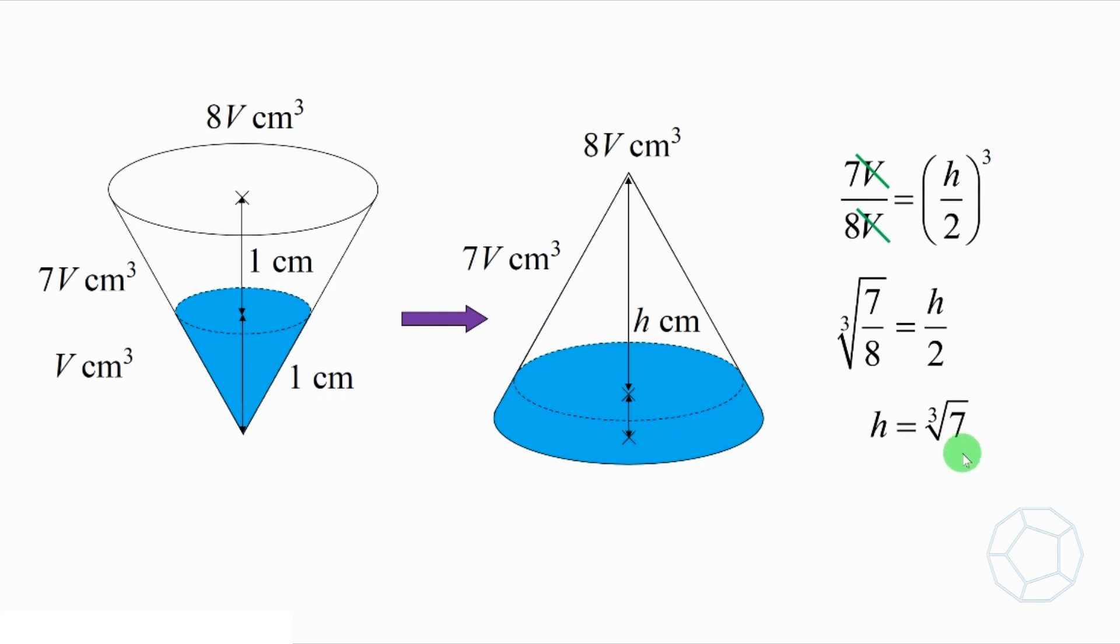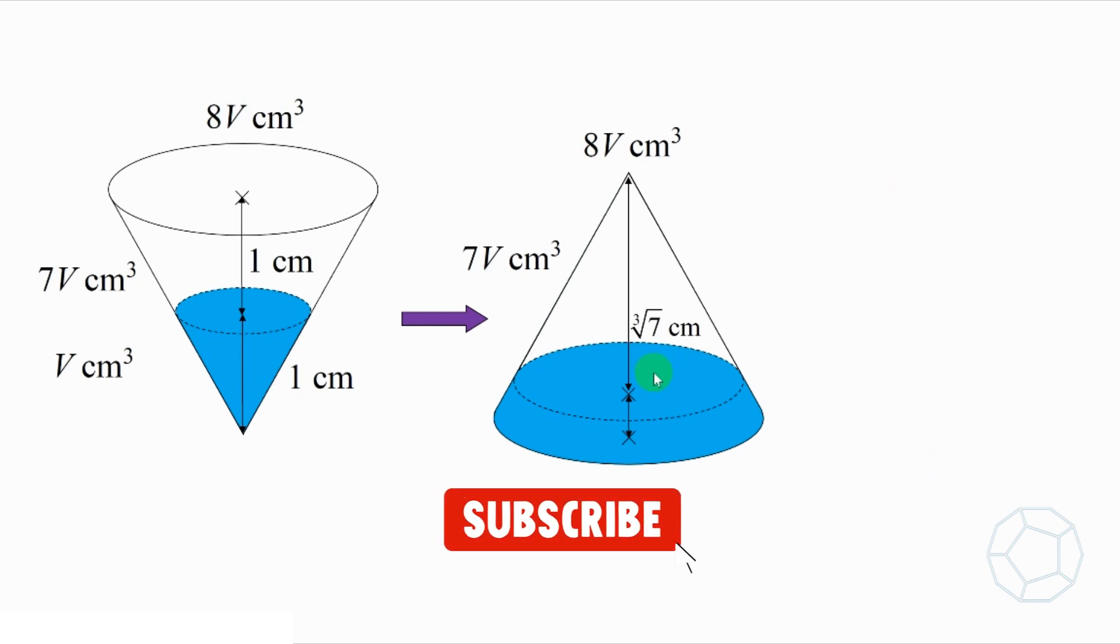So, we get it. The new water level is equal to 2 minus cube root of 7, which is roughly 0.0871 cm.